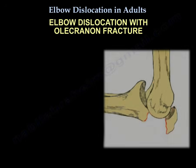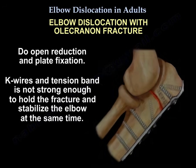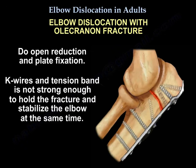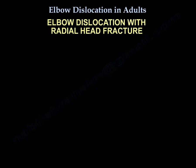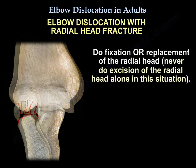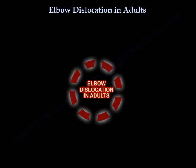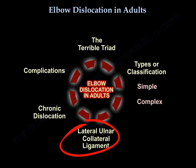For elbow dislocation with olecranon fracture, you need open reduction and plate fixation — a K-wire and tension band is not strong enough to both hold the fracture and stabilize the elbow. For elbow dislocation with radial head fracture, do fixation or replacement of the radial head. Never do excision of the radial head alone in this situation.